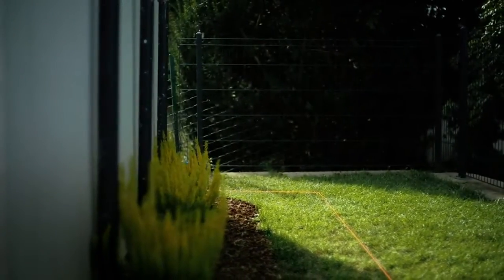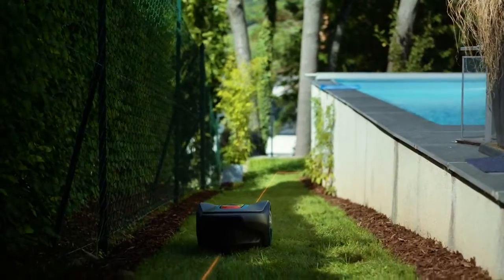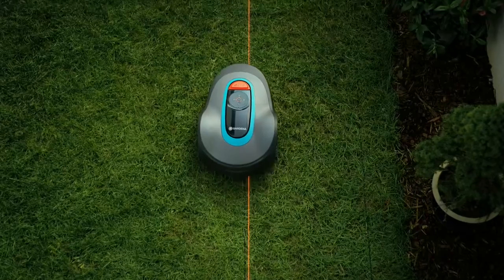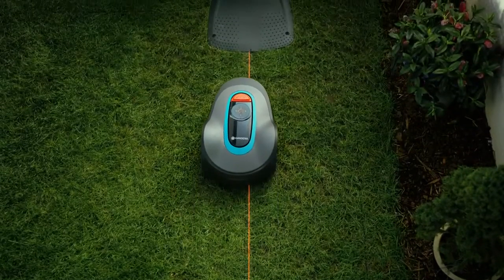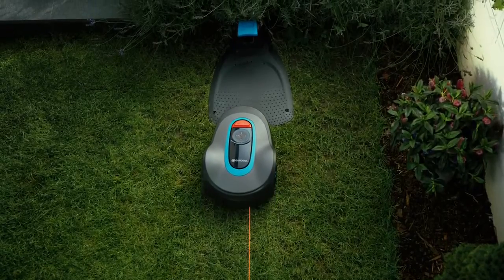That way it's possible to guide the mower to remote parts of the garden or through narrow passages so that all of the areas can be mowed the way you want them to be. The Guidewire also shows the mower the way back to the charging station when the timer gives it the command to do so or the battery is getting low.